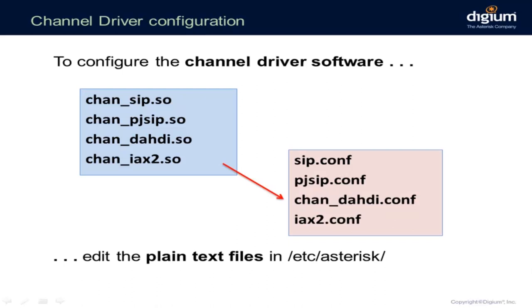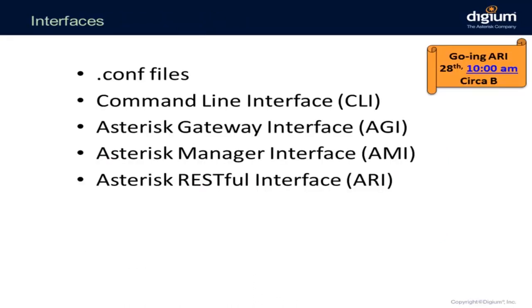What do you think pjsip.conf is for? For configuring PJSIP endpoints, trunks — in PJSIP everything is an endpoint. And chan_dahdi.conf is for configuring channels on your analog or digital cards. These files, by default, are plain text files.